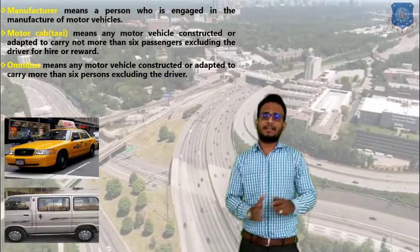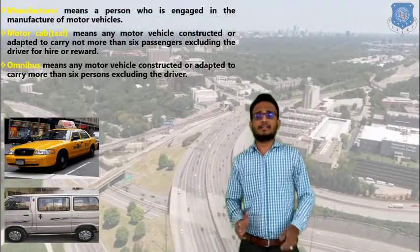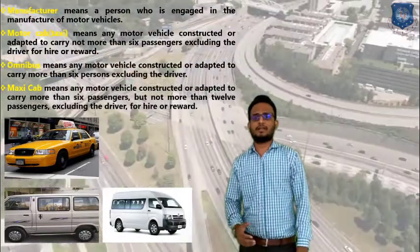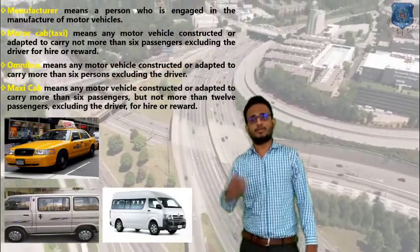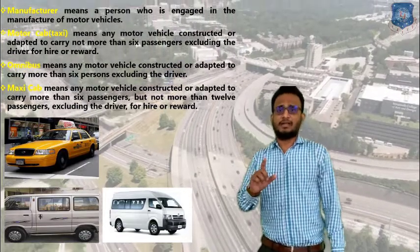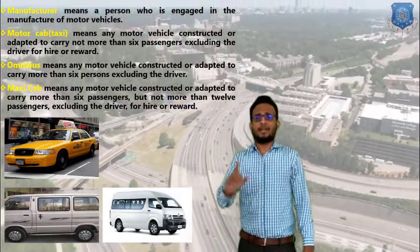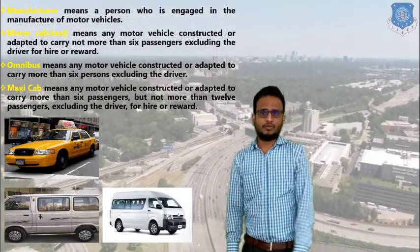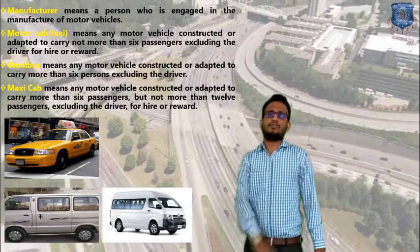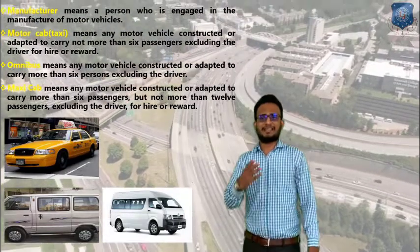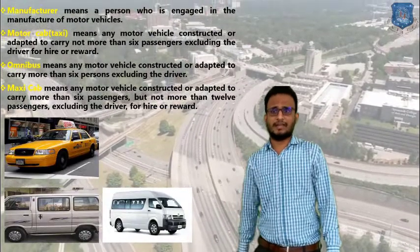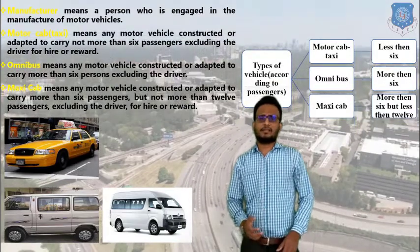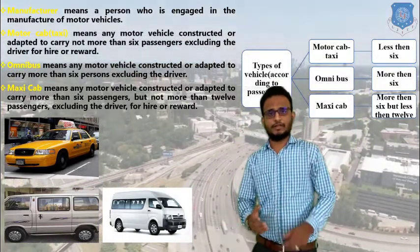The driving seat is always considered an excluding seat. The last definition here is Maxi Cab. Maxi Cab means any motor vehicle constructed or adopted to carry more than six but not more than twelve passengers, excluding the driver, known as a Maxi Cab. So these are the three basic categories of cabs: Taxi, Omni Bus, and Maxi Cab. This is a classification of motor vehicles according to passengers.